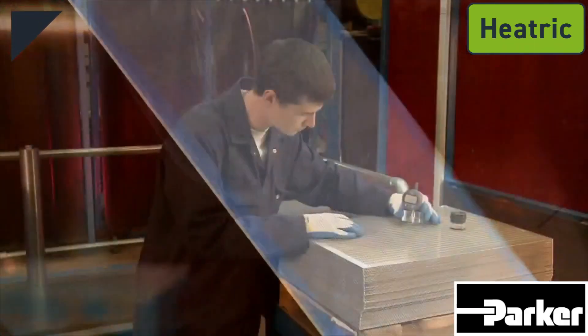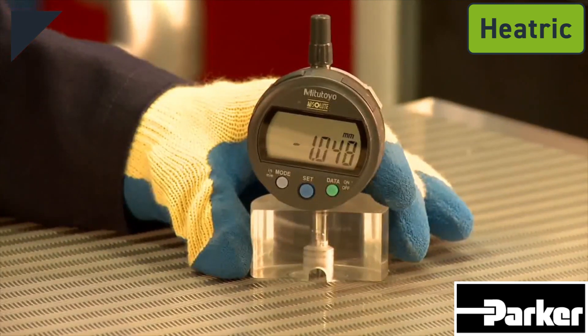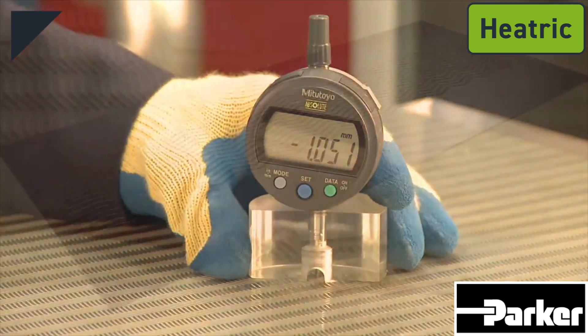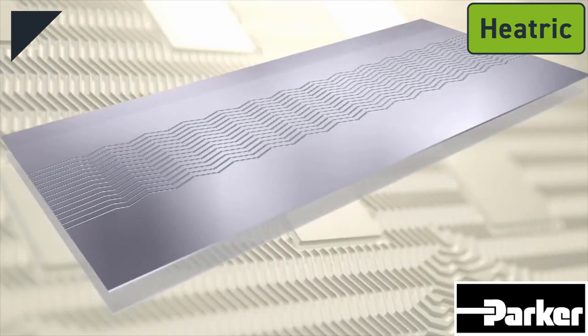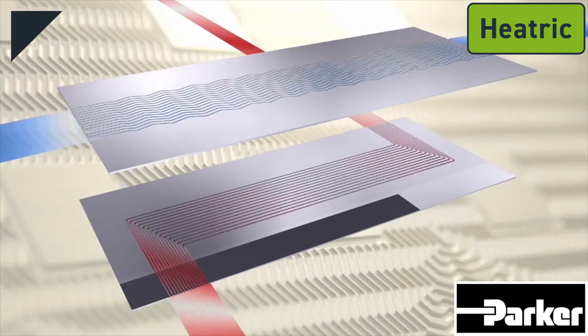These fluid flow channels are typically 2mm wide and 1mm deep semi-circles. The plate layout and flow patterns for the cold and hot sides of the exchanger are designed to suit the particular duty.